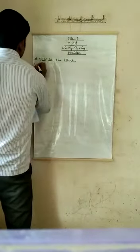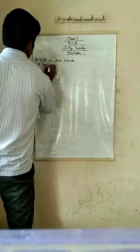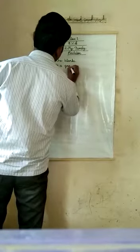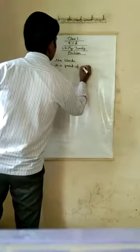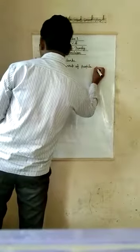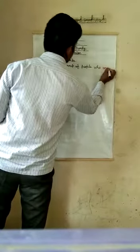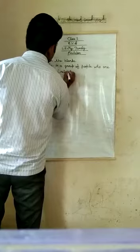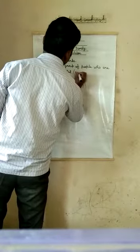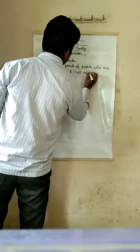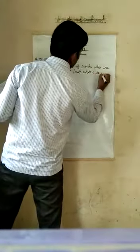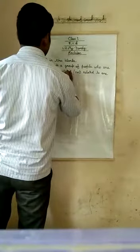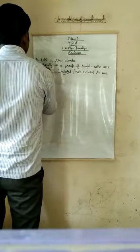First, a family is a group of people who are related, not related, to one another. So correct answer is related.